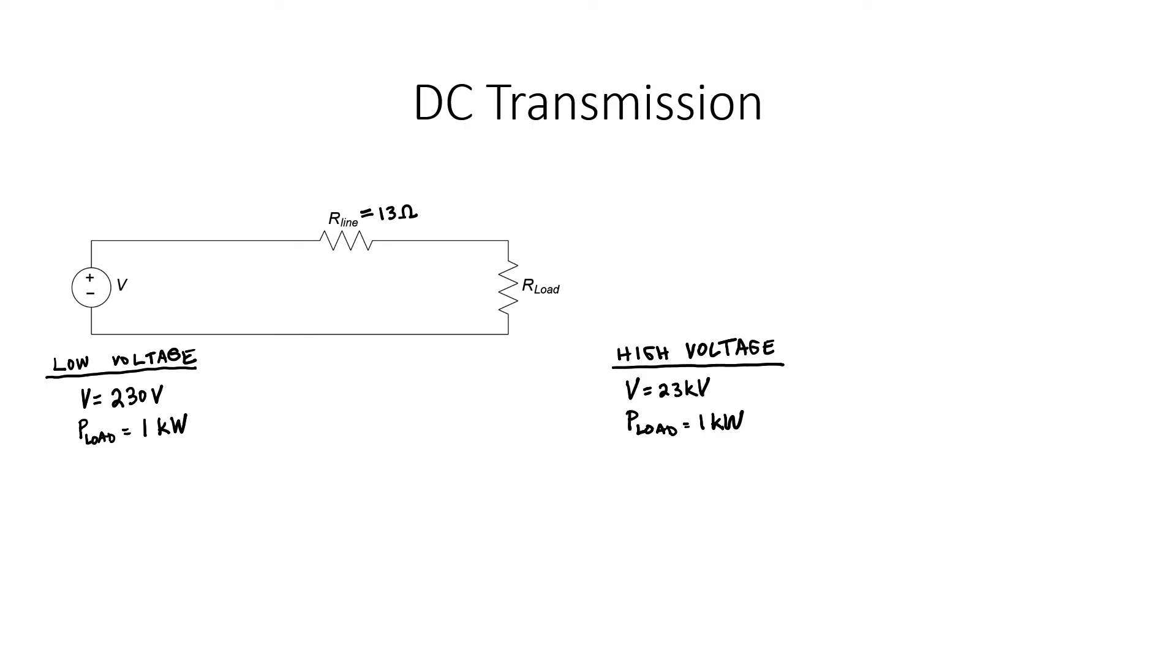Because the current is different in the two cases, I know that the load resistor is going to have to be different. Rather than calculate the value of the load resistance, I'm just going to say what the correct answer is. In the low voltage case, the required load resistance is 10 ohms. And in the high voltage case, the required load resistance is nearly 529 kiloohms.